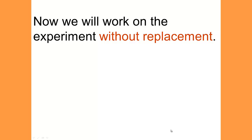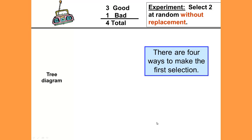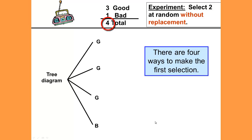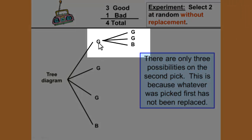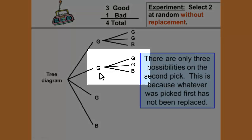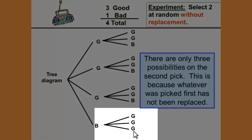Now we'll look at the same experiment without replacement, and again we will find the probability by building a tree diagram. For the first selection there are four ways — three good, one bad. Since we're doing it without replacement, we take out one of the radios after making that selection, leaving only three possibilities on the second pick. If I pick one of the good radios, that leaves two good radios and a bad radio. If I pick the bad radio, that leaves three good radios.